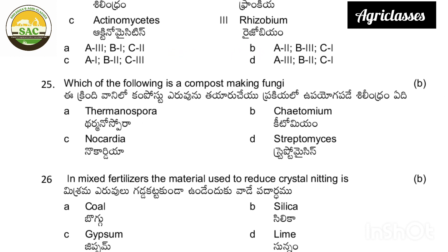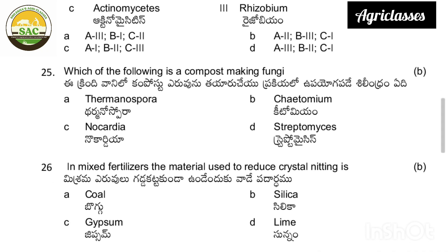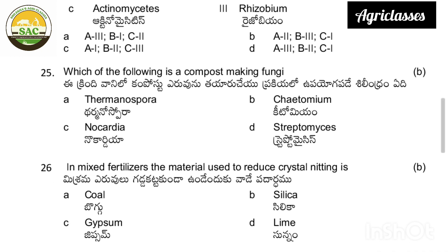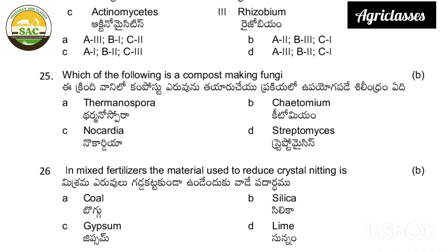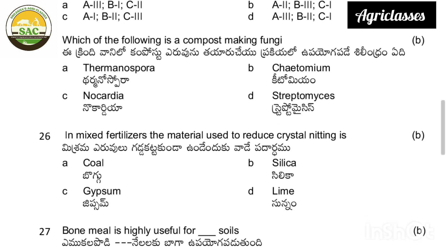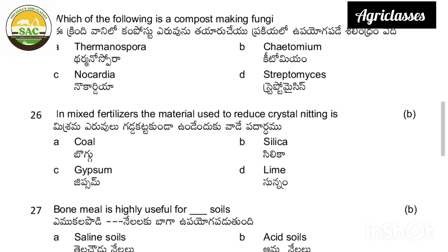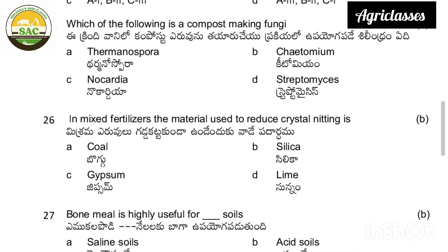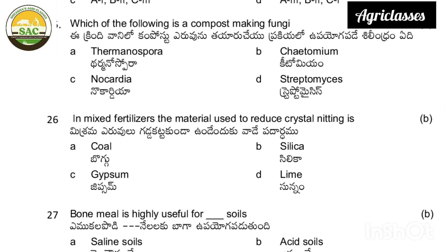Which of the following is a compost-making fungi — thermonospora, ketomium, nocardia, or streptomyces? The correct answer is ketomium. In mixed fertilizers, the material used to reduce crystal knitting — silica, zipsama, or sunnama. The correct answer is silica.